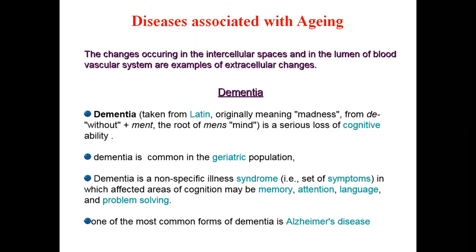The changes occurring in the intercellular spaces and in the lumen of the blood vascular system are examples of extracellular changes. The first disease I will discuss is dementia. Dementia is taken from Latin, originally meaning madness - from 'd' (without) plus 'ment' (the root of mind). It is a serious loss of cognitive ability, common in the geriatric population. Dementia is a non-specific illness syndrome in which the affected areas of cognition may include memory, attention, language, and problem solving. One of the most common forms of dementia is Alzheimer's disease.